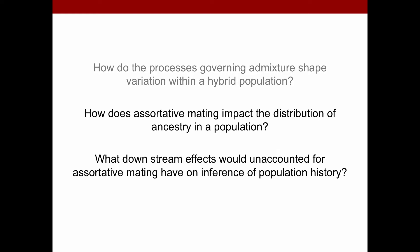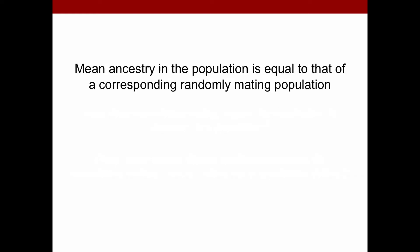I'm going to skip ahead and give you one result straight off the bat, that mean ancestry in the population is exactly equal to—you can prove this with a set of equations—that of a corresponding randomly mating population. By corresponding, I mean that the contribution parameters and migration rates are the same. So assortative mating does not affect mean ancestry in the population at all. This makes sense when you think that the average ancestry over all individuals in the population just depends on the pool of parents, not who's mating with whom, which is all that we're changing under this assortative mating model.